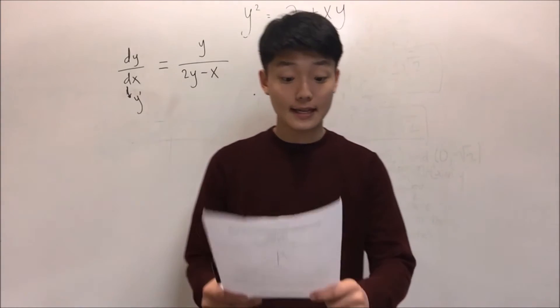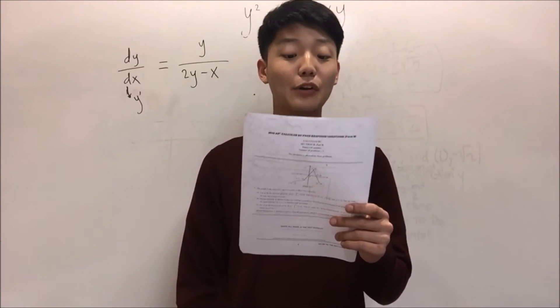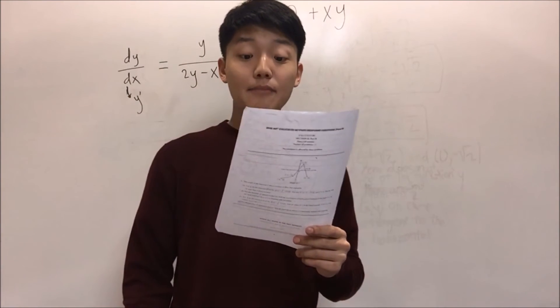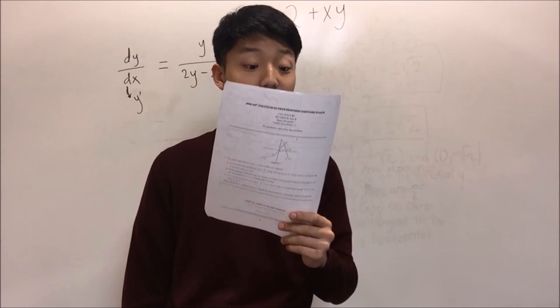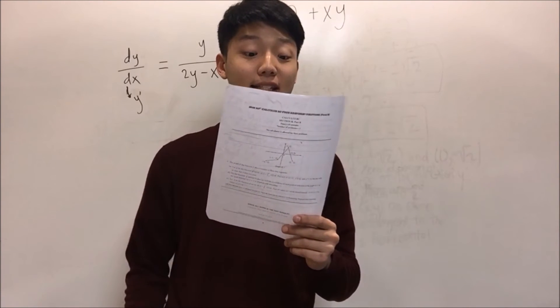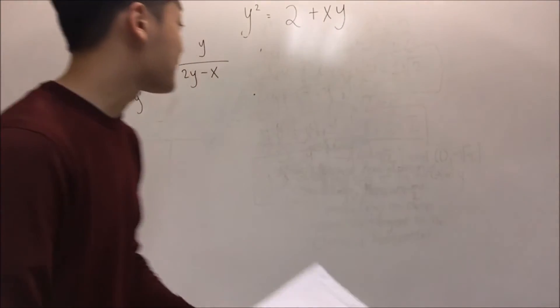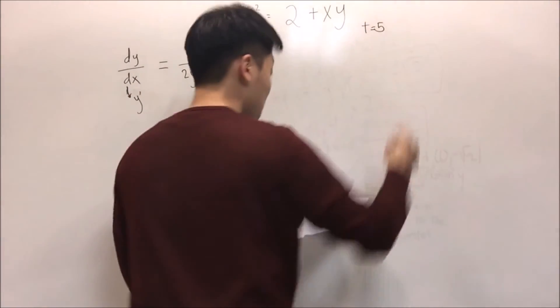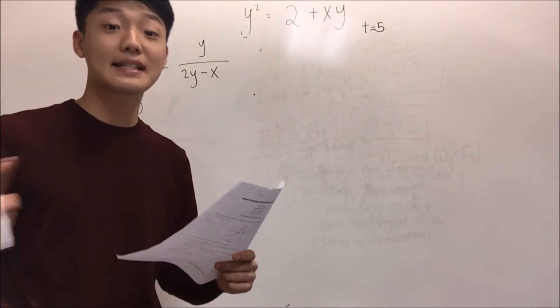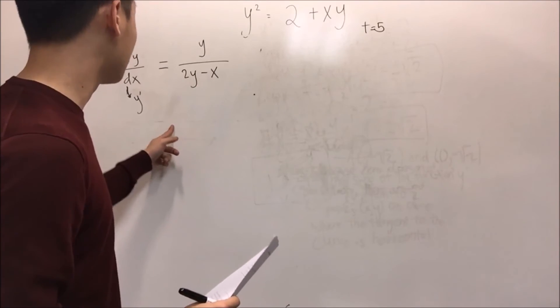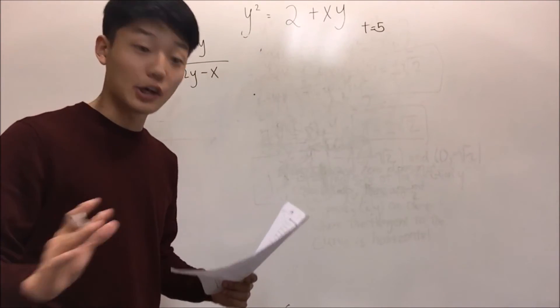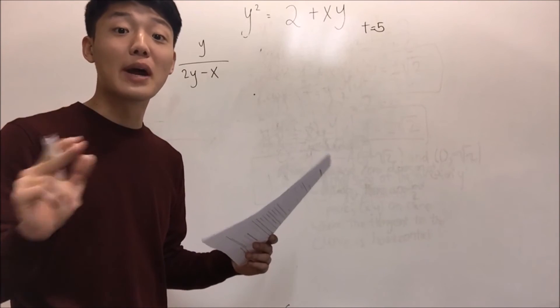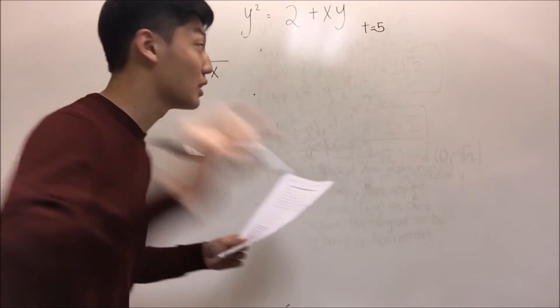Part D says: let x and y be functions of time t that are related by the equation y squared equals 2 plus xy. At time t equals 5, the value of y is 3 and dy/dt equals 6. Find the value of dx/dt at time t equals 5. Right now for this problem Part D, we are only talking about when time equals 5. Also, because we are talking about dy/dt or dx/dt, this means differential equation again.